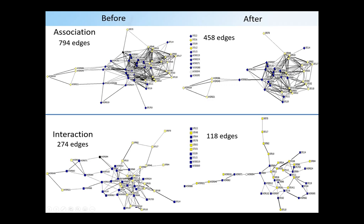We see this less so in our association network. Our association network starts with more edges and has more redundant connections, so it's going to be less impacted by the removal of important individuals.